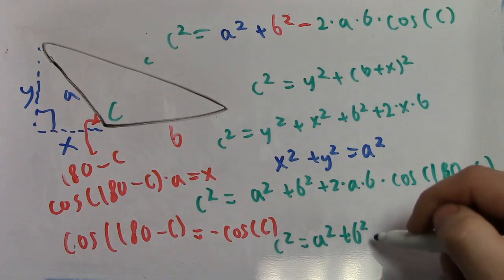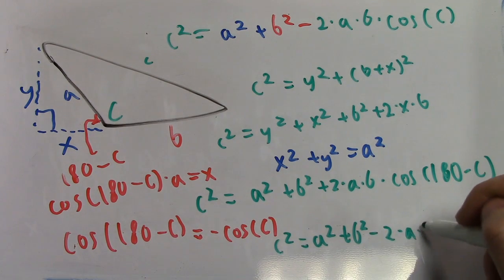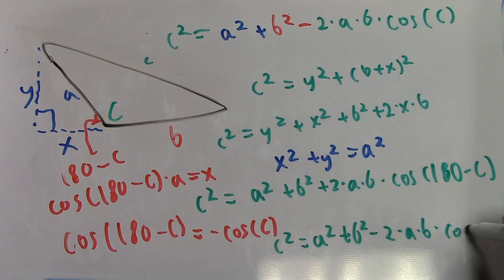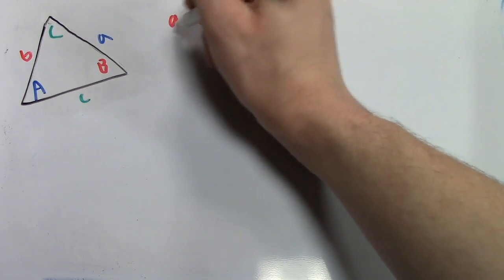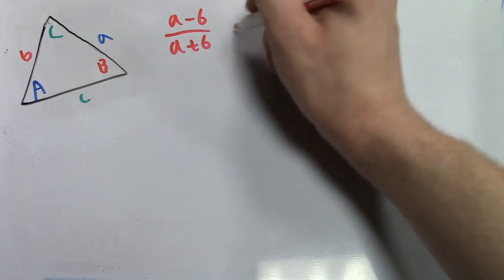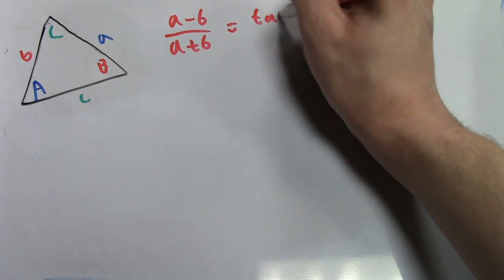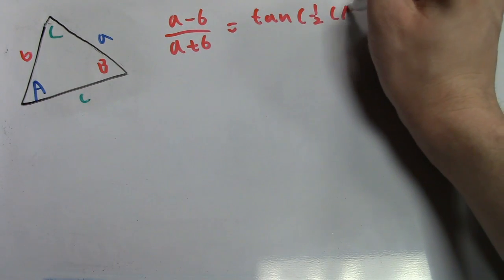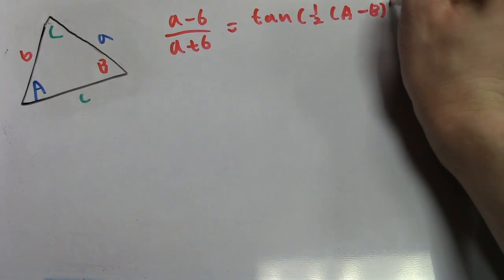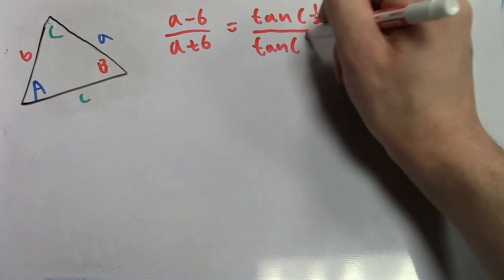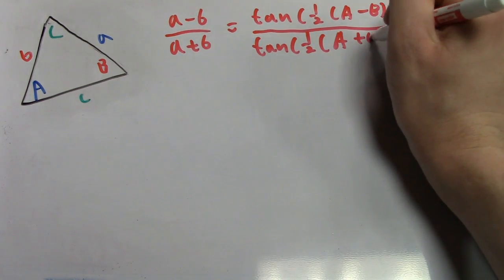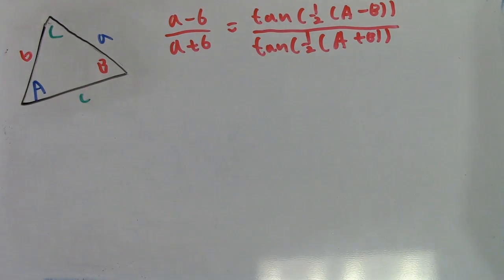Looking at the equation, we can see that we are pretty close to the Law of Cosines. A property of cosines — and you can check this for yourself with a calculator — is that the cosine of 180 minus an angle is equal to the negative cosine of that angle. So, making that last correction, we can see that we get the Law of Cosines. Again, like Law of Sines, the choice of angle and sides was mostly arbitrary, so Law of Cosines applies to any appropriate angle-side matchup. Lastly, we will look at Law of Tangents, which states that side A minus side B over side A plus side B is equal to the tangent of one-half times angle A minus angle B, over the tangent of one-half times angle A plus angle B.